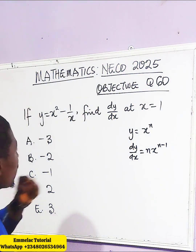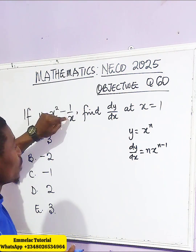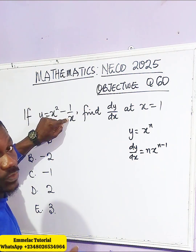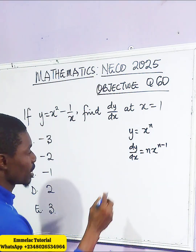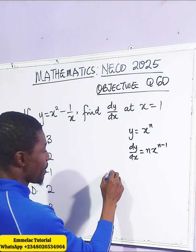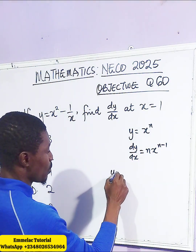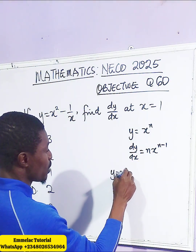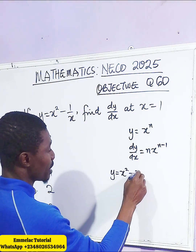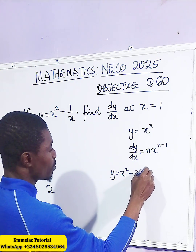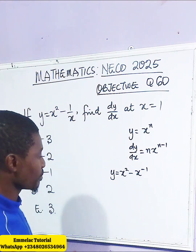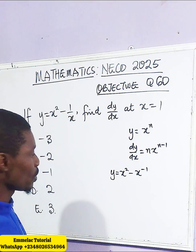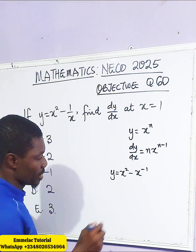However, this 1 over x, we can actually change it to an index, giving us y equals x squared minus x to the power of negative 1. So let's start.